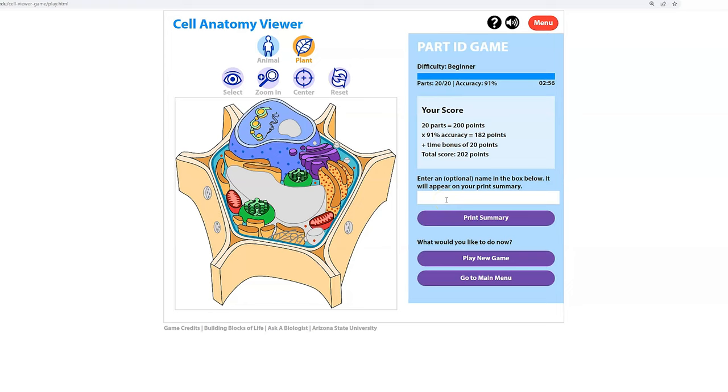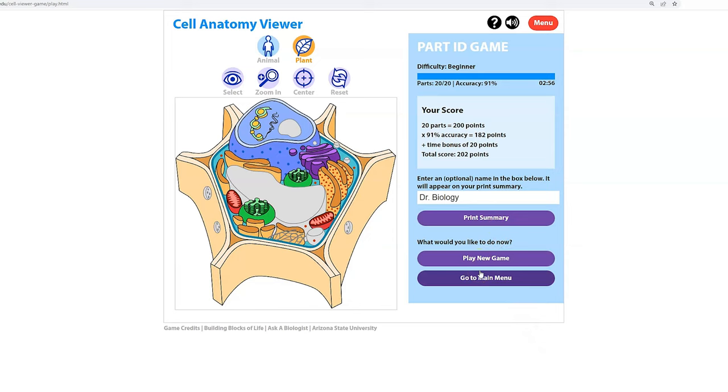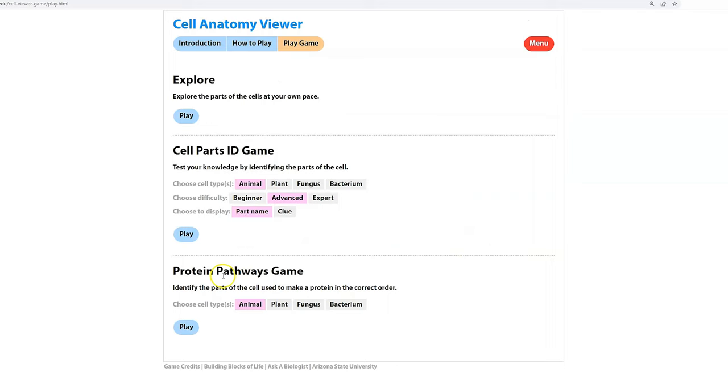We could print a summary. We could put our name in. I can print the summary and it shows all the parts that were identified in the animal cell and all the parts that were identified in the plant cell. At this point I can play another game. Let's go play a new game and let me introduce you to the protein pathway game.